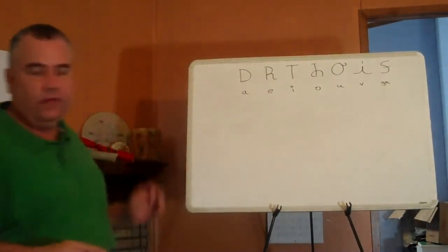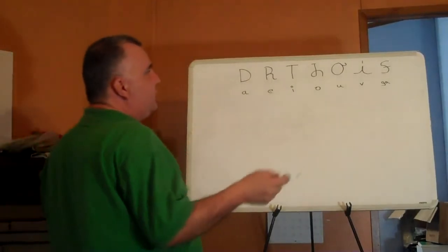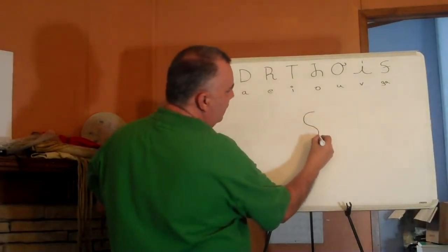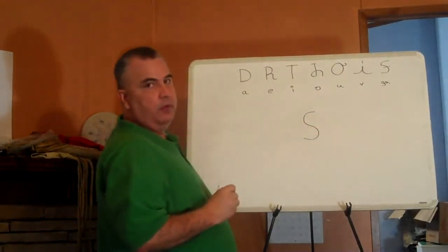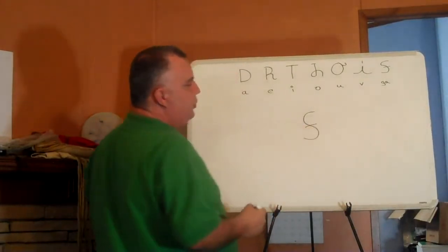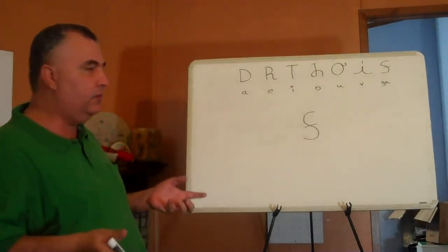Now we're going to do our first combined sound, the ga. Now, there are several letters that have this as part of their shape. So you have to always make sure that you clearly do whatever the second shape is so there's no confusion.